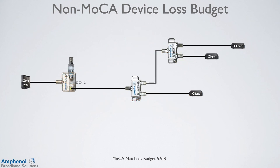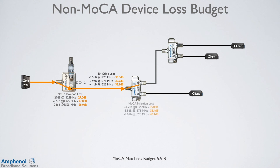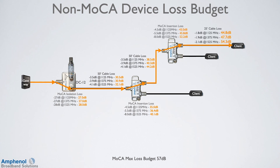This example is similar to what you may find in an MDU loop system, where one room feeds another. We'll be calculating from the gateway to the top right client. First we have the port-to-port isolation loss from the tap to the out port of the DC12, then cable loss, insertion loss of the first two-way, cable loss, insertion loss of the third two-way, and the last cable loss. Add each individual loss up for the total loss budget.